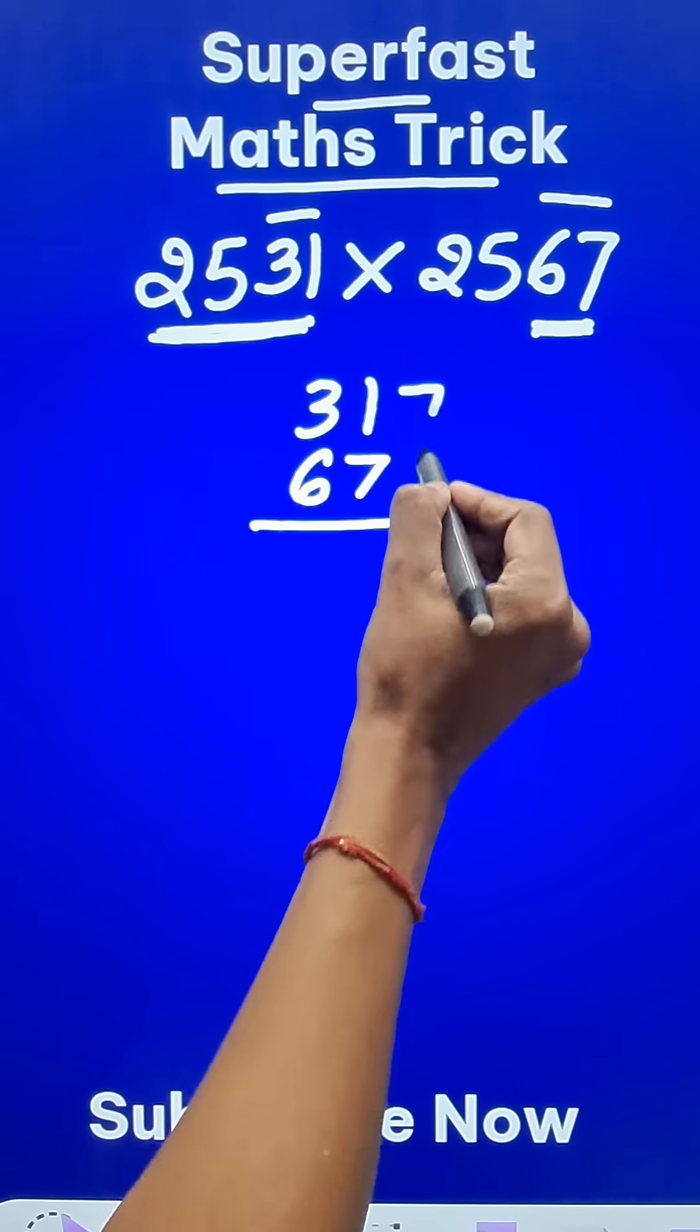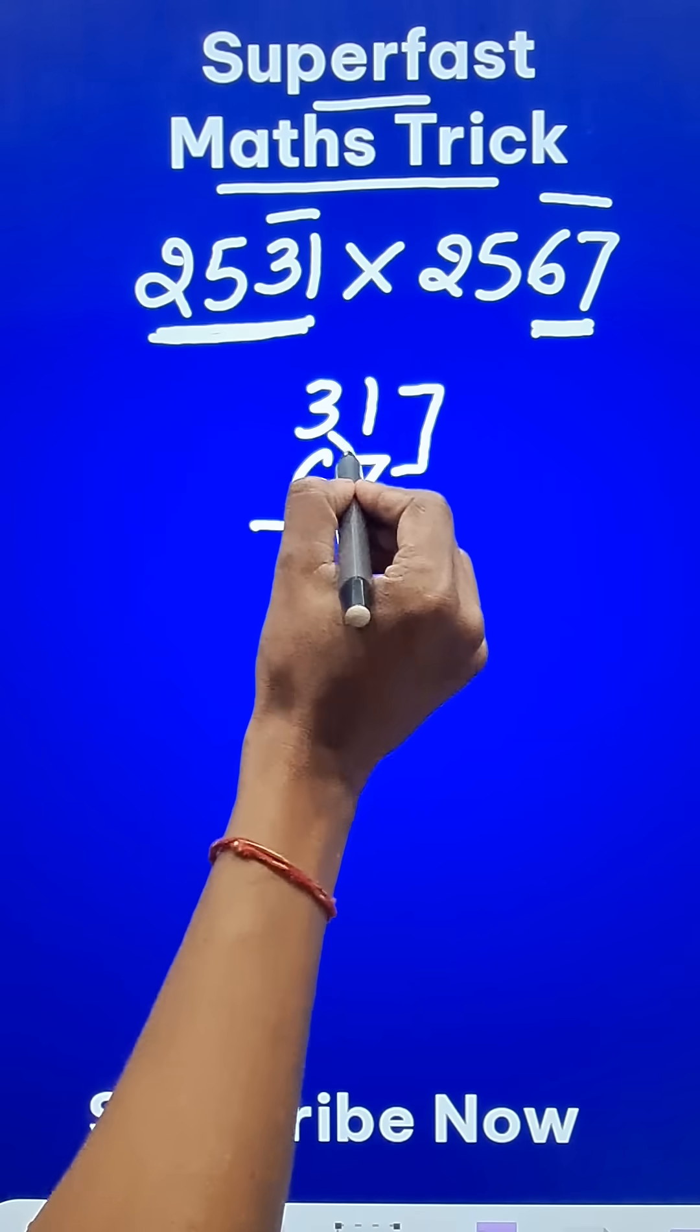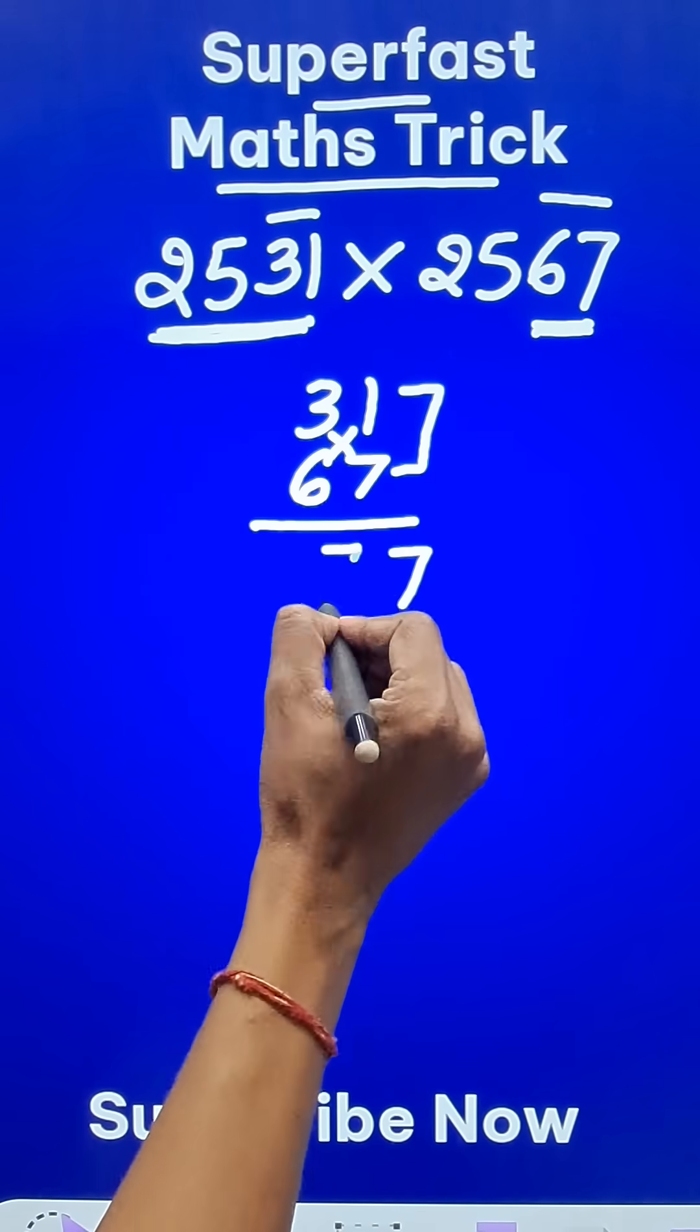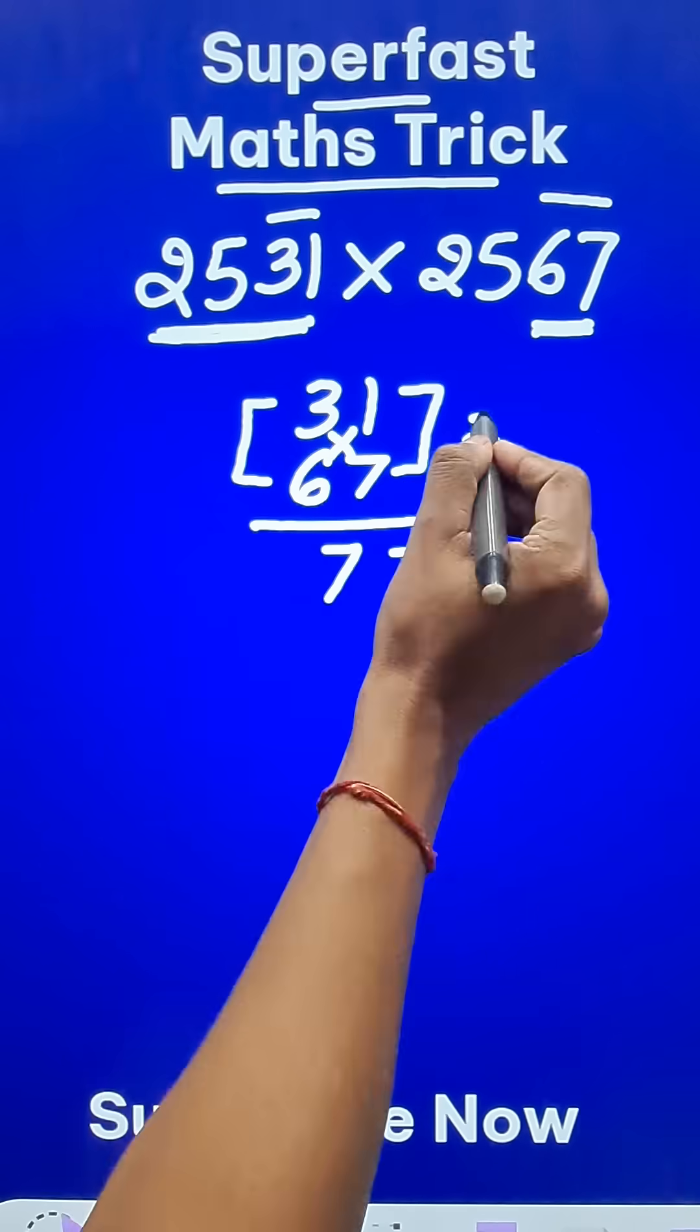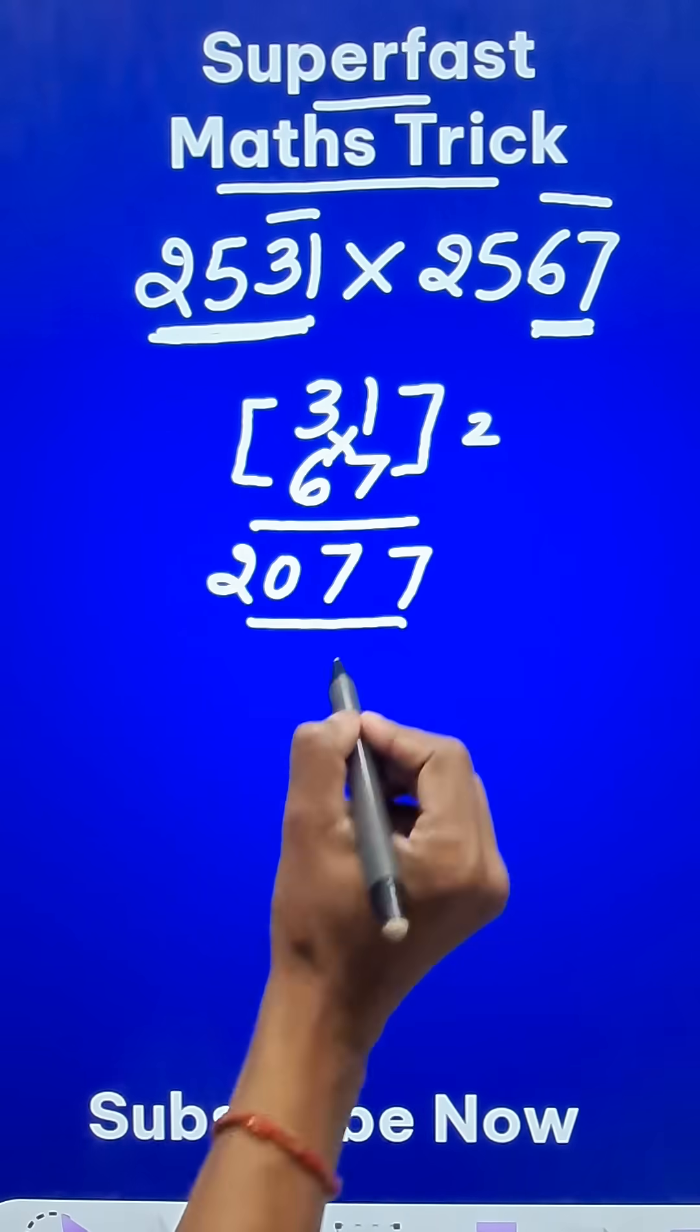You can do it using Vedic Maths. 1 into 7 is 7. This is 21 plus 6 which is 27. So 7 and a 2 carry, and then 6 times 3 is 18 plus 2 is 20. So 2077 is the product.